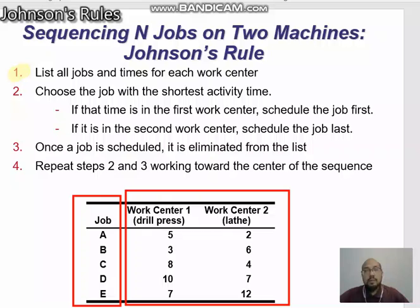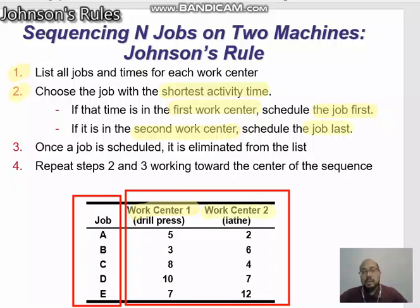Second step: choose the job with the shortest activity time. If that time is in the first work center, schedule the job first. If it is in the second work center, schedule the job last. Once a job is scheduled, it is eliminated from the list. Repeat steps two and three, working toward the center of the sequence.